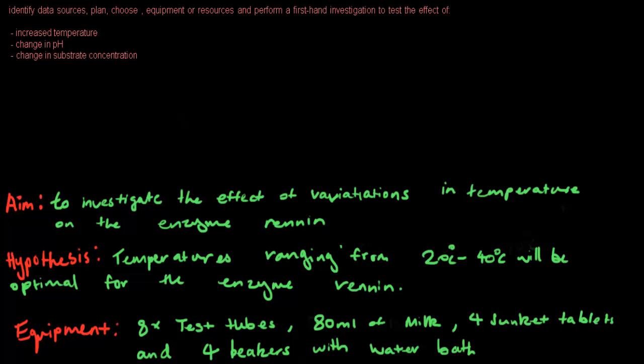Welcome to Biology Exposed. Today we'll be doing dot point 1.3, which requires us to identify data sources, plan, choose equipment or resources, and perform a first-hand investigation to test the effect of increased temperature, change in pH, and change in substrate concentration. This is part one of a three-part series focusing on temperature.